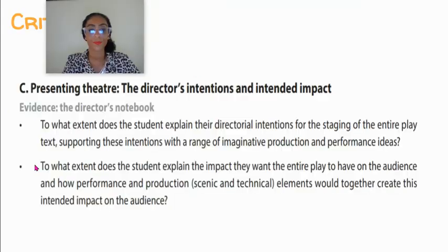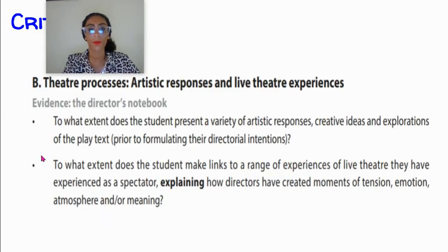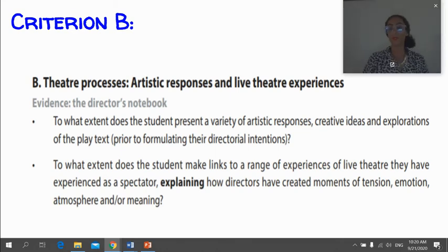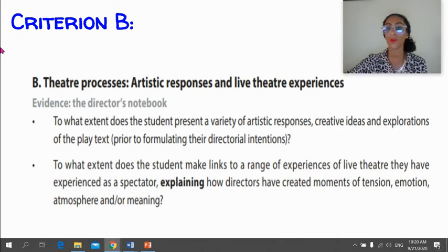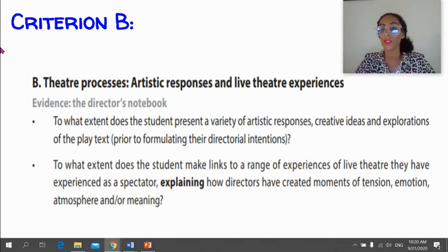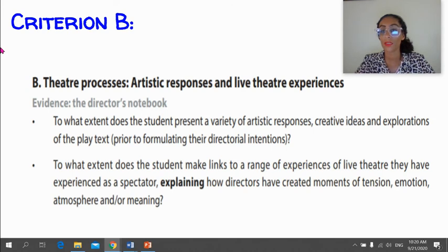Criterion B relates to your theatre exposure as a student — what theatre have you seen? It has two parts. First: to what extent does the student present a variety of artistic responses, creative ideas, and explorations of the play text? Second: to what extent does the student make links to a range of experiences of live theatre that they've already seen?